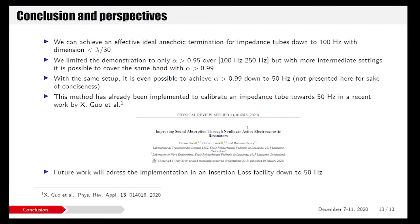To conclude, we have seen that we can achieve an effective ideal anechoic termination for impedance tubes down to 100 hertz with dimension smaller than lambda over 30, which is the dimension of the electroacoustic absorber, which is 10 centimeter depth. So we limited here the demonstration to 95 percent of absorption over 100 to 250 hertz, but we can show intermediate settings and we could have done the demonstration with much more refinement of the frequency bands of interest, with alpha higher than 99 percent. But for the lack of time, I just limited to these five settings that were easy to set quickly. With the same setup, we can even go down to 50 hertz, but once again I didn't show it for the sake of conciseness. And this setting has been used for the recent paper by Chin Cinco on the sound absorption measurement of nonlinear electroacoustic absorber, where we needed to calibrate an impedance tube for measuring the absorption coefficient of this device.